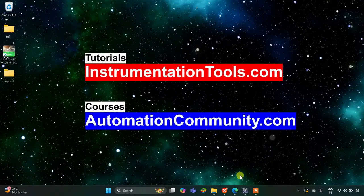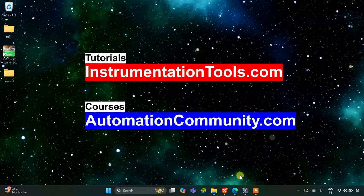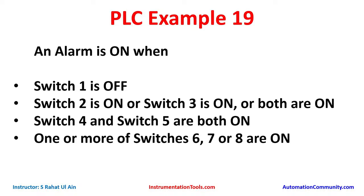Hello everyone, welcome to Automation Community. Today in this video we are going to discuss an example about controlling an alarm. Example 19: an alarm is on when switch one is off, switch two is on, or switch three is on or both are on, then switch four and switch five are both on, and one or more of switches six, seven, or eight are on.